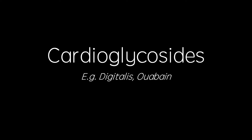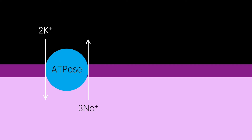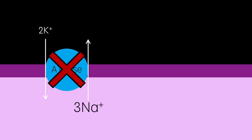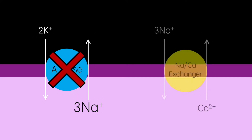The first class of positive inotropes I'm going to discuss are cardioglycosides, such as digitalis and ouabain. These drugs inhibit the sodium-potassium transport proteins on cardiomyocyte cell membranes, meaning that less sodium is extruded from the cell and therefore its intracellular concentration increases. This has an effect on sodium-calcium exchanger proteins, also in cardiomyocyte cell membranes. As intracellular sodium concentration is increased, the concentration gradient between the outside and inside of the cell is decreased, and so the rate at which it enters the cell via this protein is diminished.